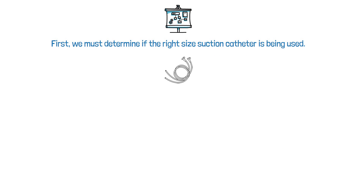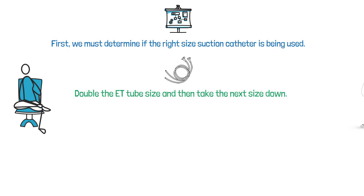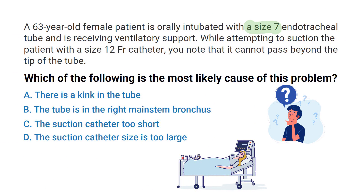To determine if the right size suction catheter is being used, double the ET tube size and then go to the next size down. The patient has a size 7 endotracheal tube — doubling that gives 14, and the next smallest catheter size is a size 12. This confirms that a size 12 catheter is the appropriate size for a size 7 endotracheal tube, so we can rule out answer choices C and D.